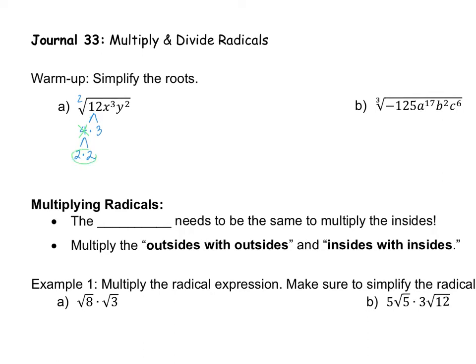When taking a square root, you're looking for pairs. I have a pair of 2s, so that 2 can come out, but I have a leftover 3, so that goes back inside the root. I'll make a little square root and put the 3 inside.